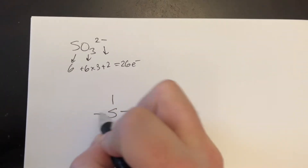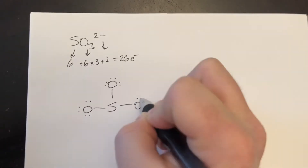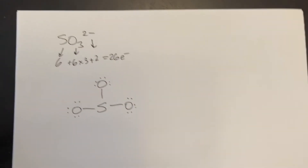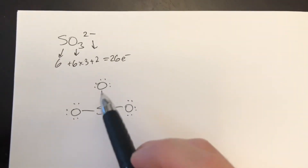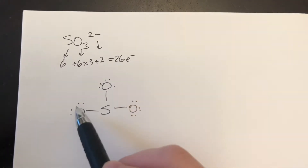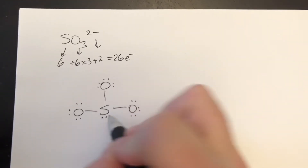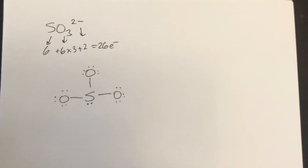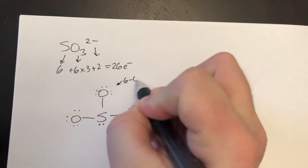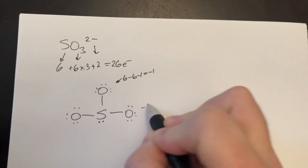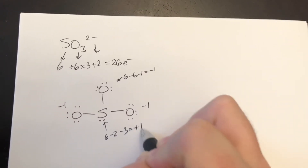We give the outer atoms their electrons first. After distributing electrons to the oxygens, we've used 24 electrons and have two left, which go on the central sulfur atom. At this point everything has an octet. Checking formal charges: each oxygen is 6 minus 6 minus 1 equals negative 1, and the sulfur is 6 minus 2 minus 3 equals positive 1.